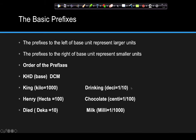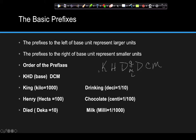Our basic prefixes are going to be kilo, hecto, deca, then the base unit, then deci, centi, and milli. Everything to the left of the base unit is a larger unit; everything to the right of the base unit will be a smaller unit. So if you know the order and you know that everything is based on powers of 10, you can get all of the conversion factors — for example, how many kilometers is equal to how many meters, or how many decimeters is equal to how many hectometers.